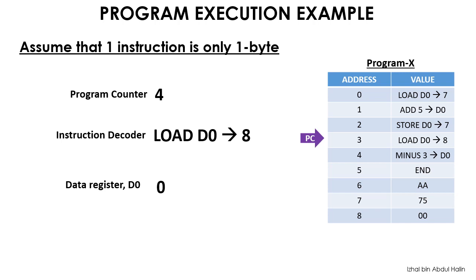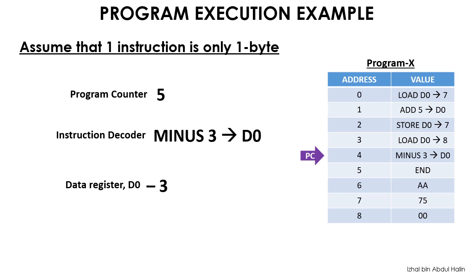The fifth fetch-execute cycle now starts with the program counter's value equal to 4. This value is put onto the address bus and now the program counter is pointing to address 4. The instruction to subtract 3 from the contents of d0 is sent to the instruction decoder through the data bus, and the program counter's value is incremented to 5. The decoded instruction causes the CPU to subtract 3 from the data in d0. Thus, 0 minus 3 is executed. The value in d0 is now negative 3. This concludes the fifth fetch-execute cycle.